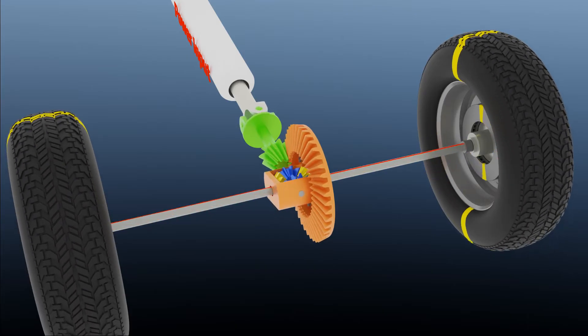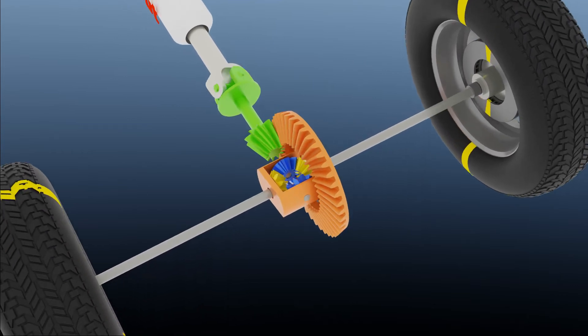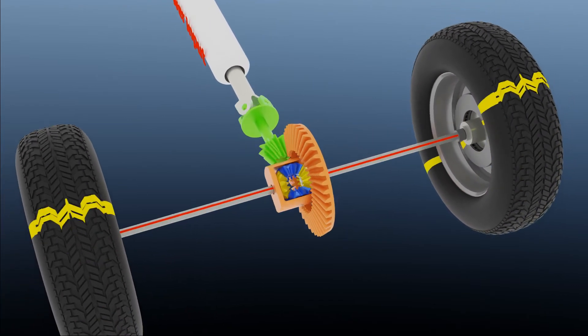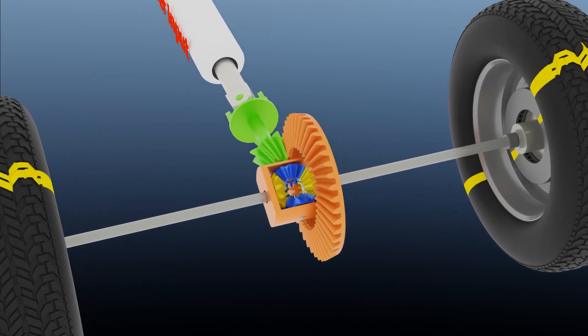On a straight road when both wheels have the same amount of traction, spider and sun gears unit rotate as a single unit, so both side wheels rotate at the same speed.